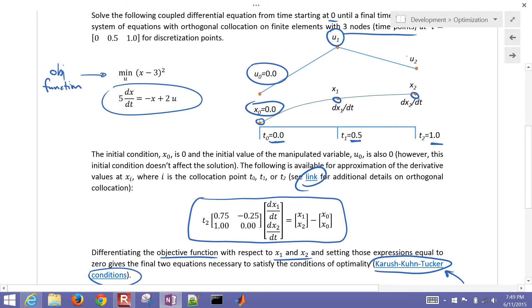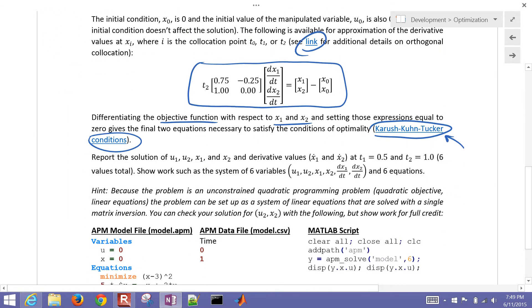Okay, so u1, u2, x1, x2, and then our two derivative terms as well. So six values in total and we want to report those.